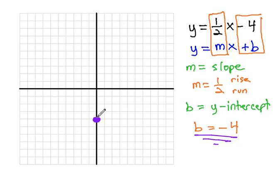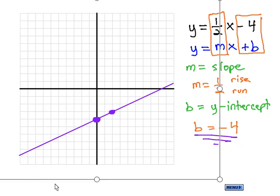Now that we have a point, from that point, we can rise 1 and run 2 to get our next point. From there, if we connect the dots, we should get a straight line. Getting closer, there we go. There's a straight line that connects the dots.